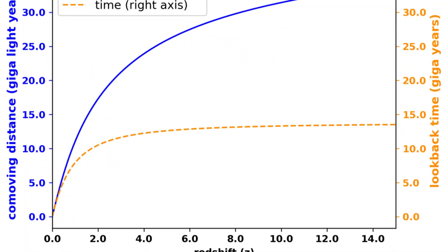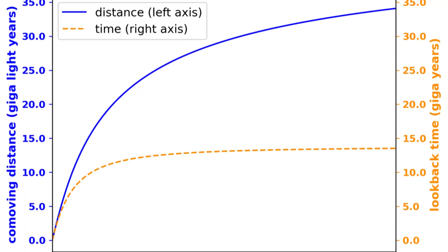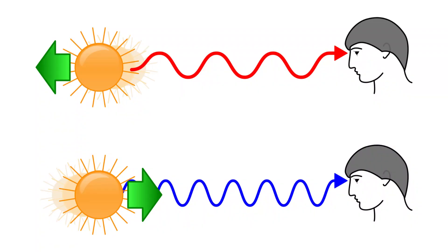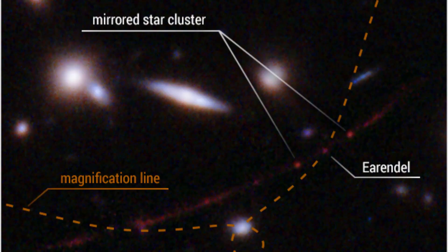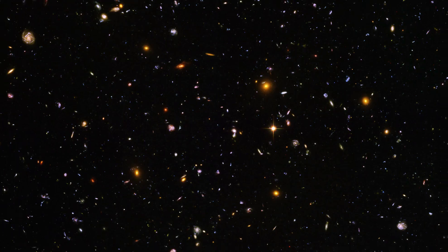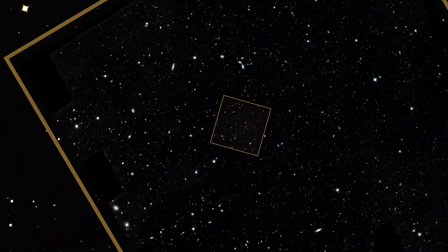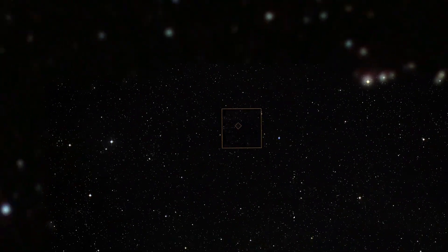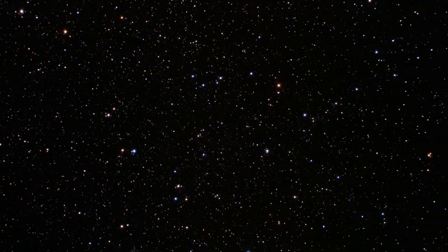Observations of celestial objects, such as redshift—a measure of how much light has stretched as the universe expands—and gravitational lensing—where light bends around a massive object—are phenomena related to the finite speed of light that would be different. Our understanding of the size, age, and dynamics of the universe could be significantly revised.